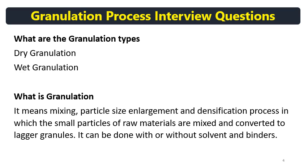What are the granulation types? Mainly dry granulation and wet granulation. Dry granulation is divided into slugging and de-slugging process, and roller compaction process. Direct compression or dry mixing process is sometimes also referred to as dry granulation process.